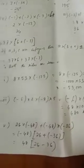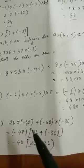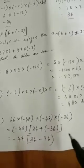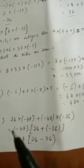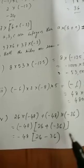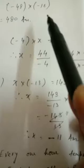Then number 3, last one, 5th question: 26 into bracket minus 48, plus minus 48 into bracket minus 36. Here, minus 48 is common on both sides — minus 48 is multiplied with 26, and again minus 48 is multiplied with minus 36. So take minus 48 as common, and then in bracket write 26 plus minus 36. When you open the bracket, you get minus 48 into minus 10 is equal to 480.